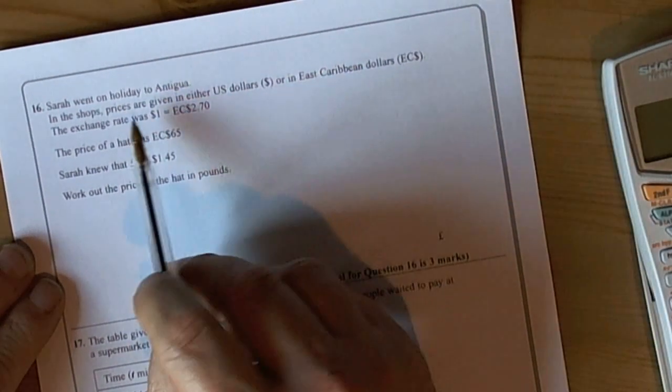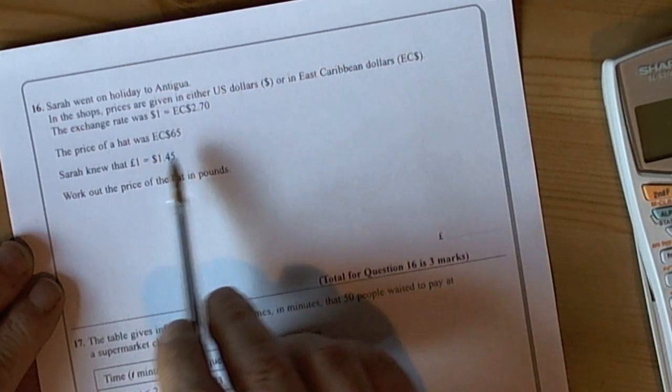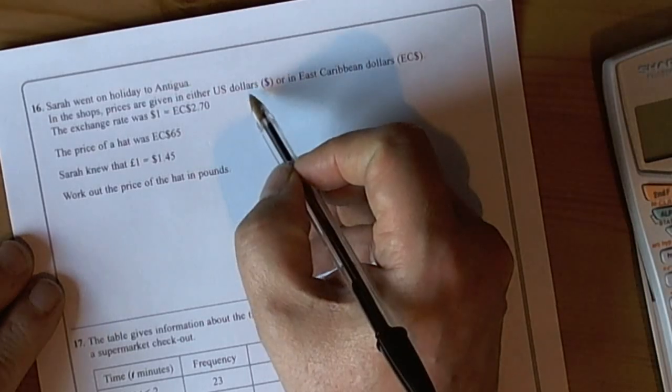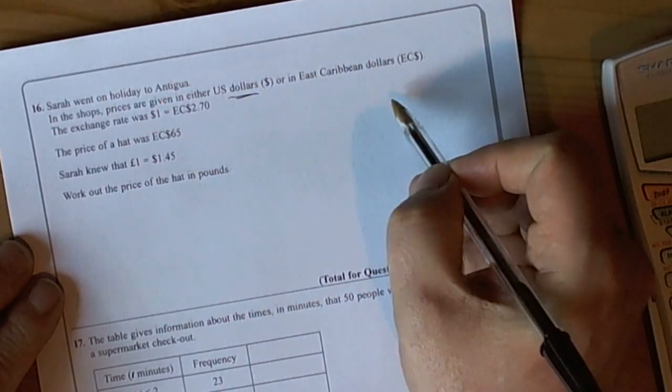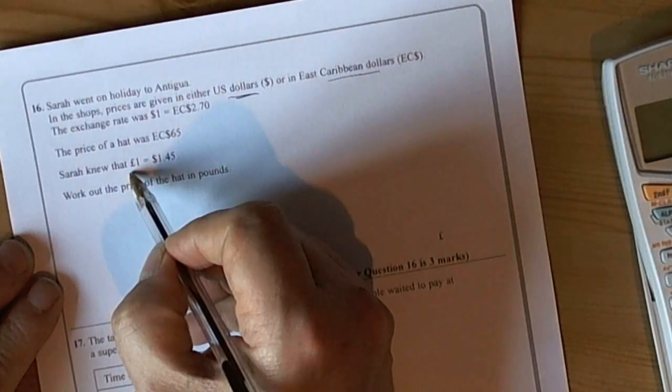This question involves looking at exchange rates between different currencies across the world. There are actually three exchange units given: US dollars, Caribbean dollars, and pounds.